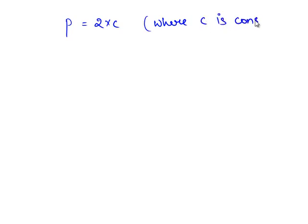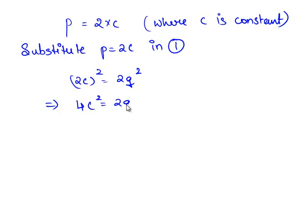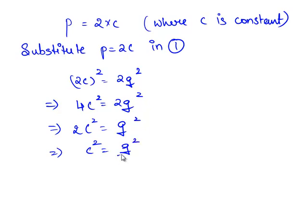Since 2 is a factor of p, p can be written as 2 times c, where c is some constant. Substituting the value of p in equation 1, we have 2c whole squared is equal to 2q squared. This implies 4c squared is equal to 2q squared, which gives 2c squared is equal to q squared.